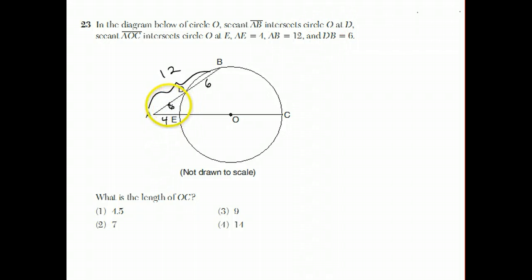So if DB is 6 and AB is 12, that makes AD 6. So we can say the outside piece, which is 6, times the entire segment, which is 12, should equal the other outside piece, which is 4, times the other entire segment, which is AC.